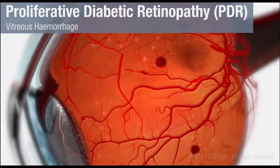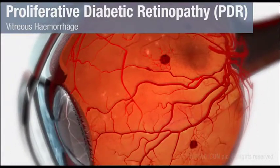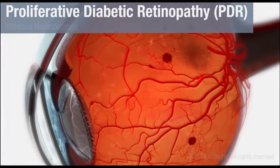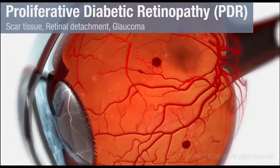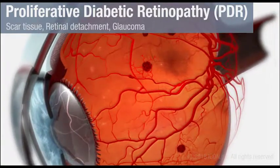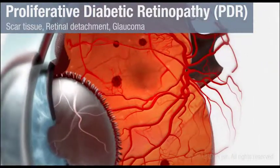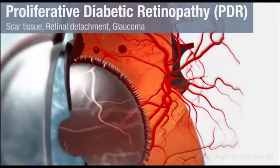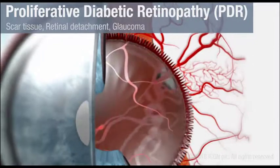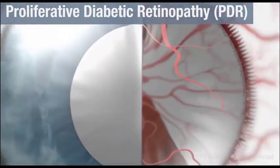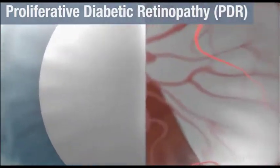Further growth of new abnormal blood vessels can lead to the generation of scar tissue, leading to retinal detachment and even glaucoma, or high pressure in the eye, during the advancing stage of retinopathy.